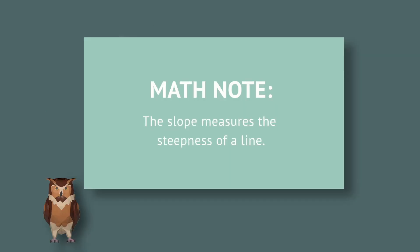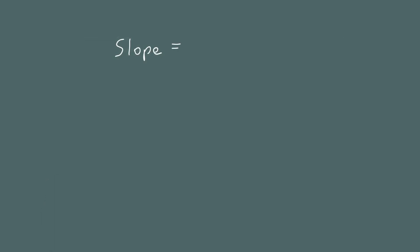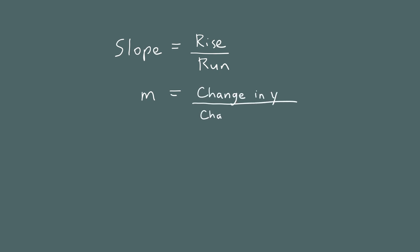First let's review the definition of slope. The slope measures the steepness of a line, and it's defined to be the rise over the run. The slope is denoted by the letter m, and the rise is the change in y divided by the change in x between two different points.